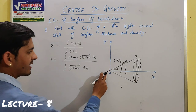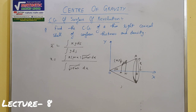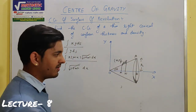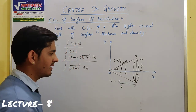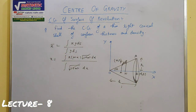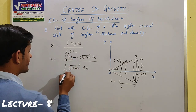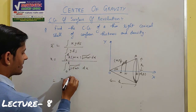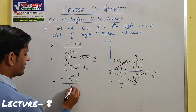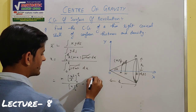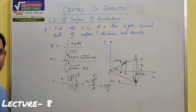x की limit 0 से h vary करेगी। y = mx और ds = √(1+m²)dx रखने पर: ऊपर = ∫[0 to h] x·mx·√(1+m²)dx = m√(1+m²)·[x³/3] 0 to h = m√(1+m²)·h³/3। नीचे = ∫[0 to h] mx·√(1+m²)dx = m√(1+m²)·[x²/2] 0 to h = m√(1+m²)·h²/2। x_bar = (m√(1+m²)·h³/3) / (m√(1+m²)·h²/2)। m और √(1+m²) cancel होंगे। x_bar = (h³/3)/(h²/2) = 2h/3।